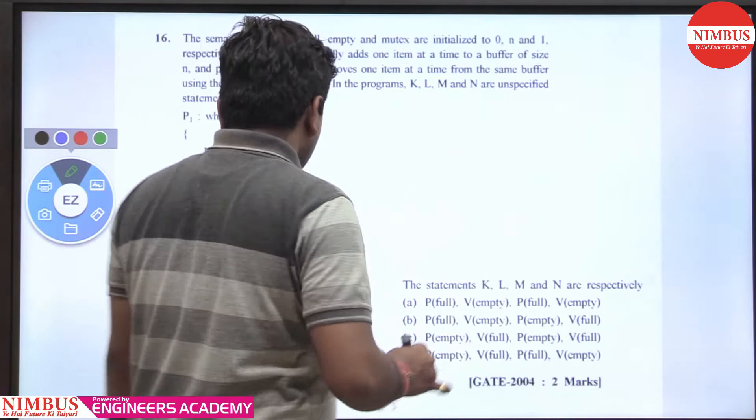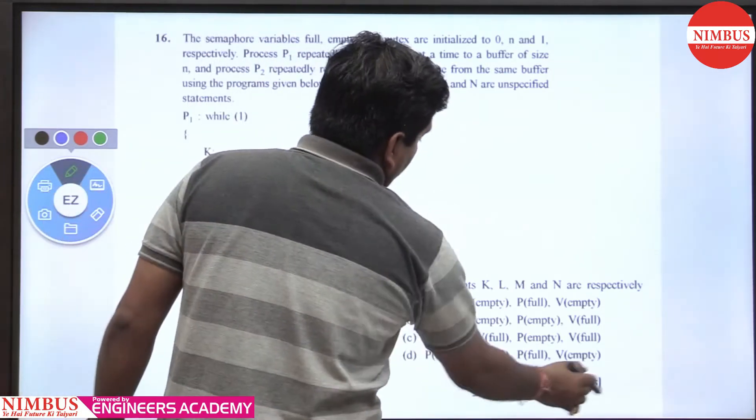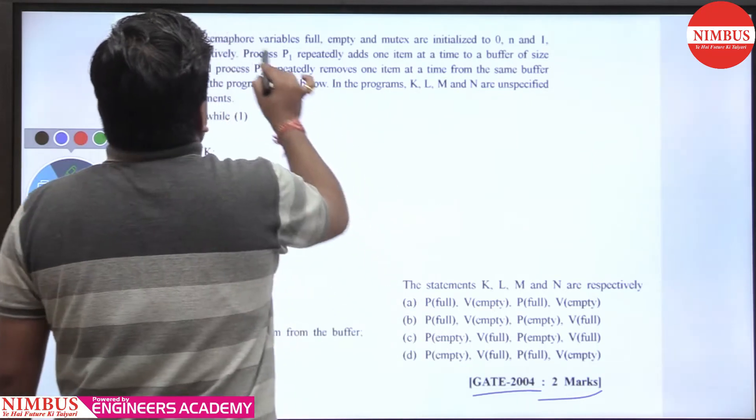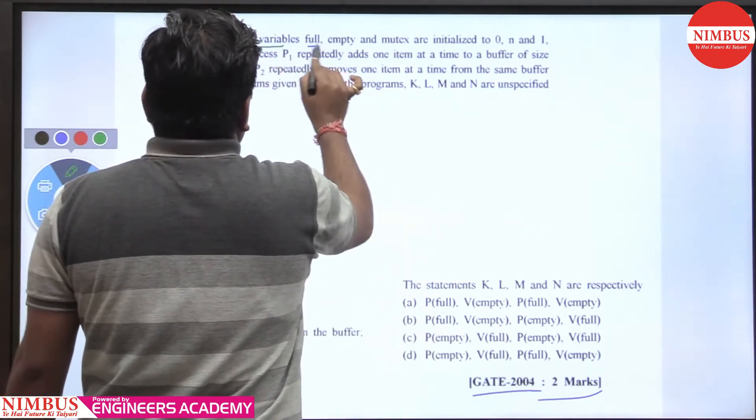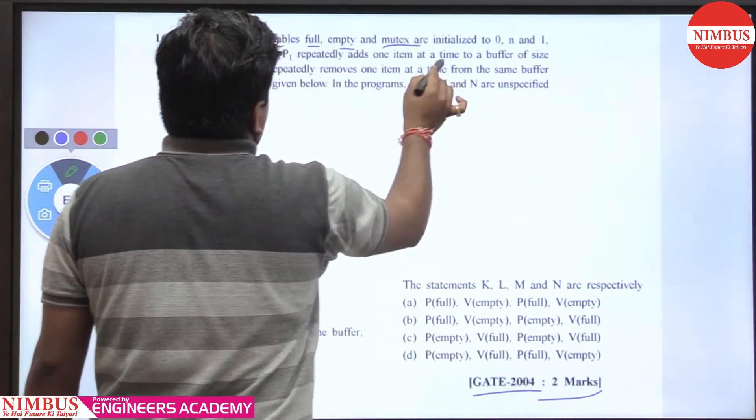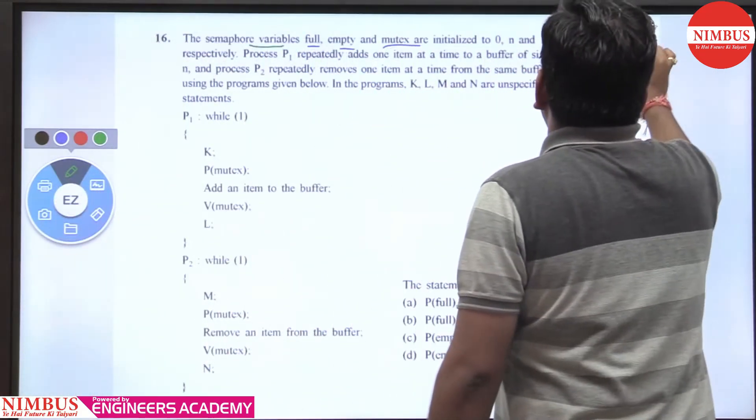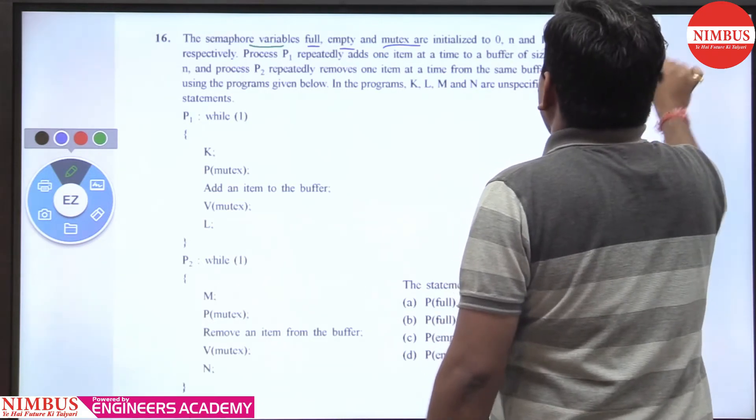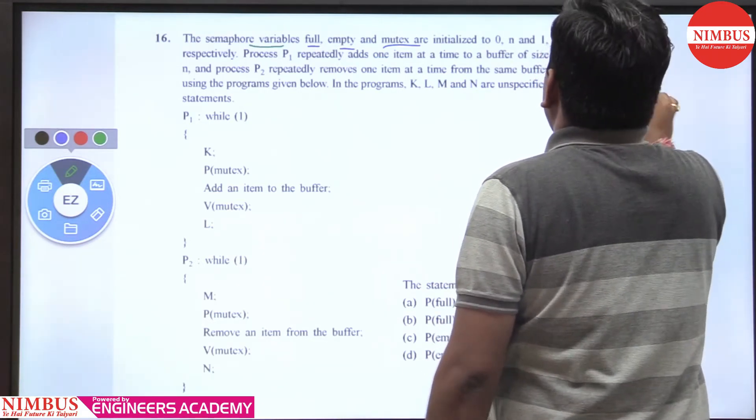Hello students, this is a GATE 2004 two marks question on the producer-consumer problem. The semaphore variables full, empty, and mutex are initialized to 0, n, and 1 respectively.